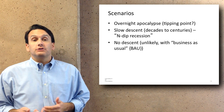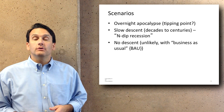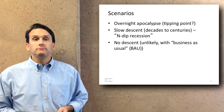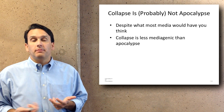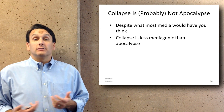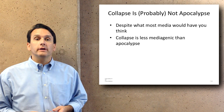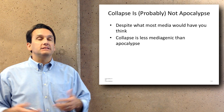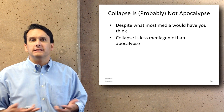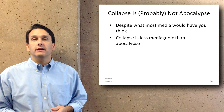Another possibility is no descent — business as usual, sometimes abbreviated BAU — though we see this as an unlikely possibility. Ultimately, collapse is probably not apocalypse. Despite what most media would have you think, collapse is less mediagenic than apocalypse — it makes for less of a good movie or story. Instead of vast danger and explosions, it's more like bad healthcare and rotting teeth that will be the harbingers of these kinds of collapse issues.